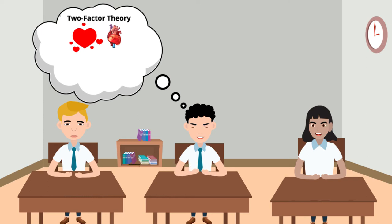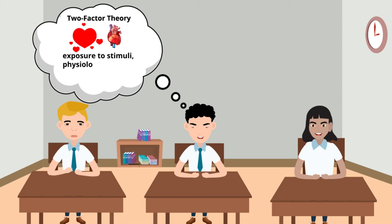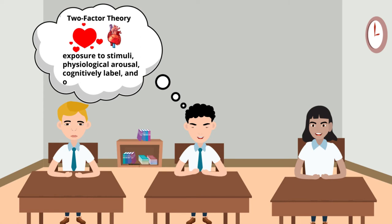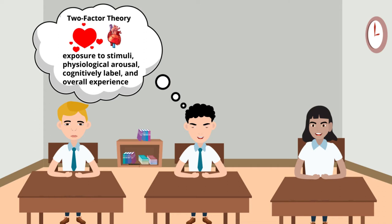The two-factor theory of emotion states that emotion is experienced in a combination consisting of exposure to stimuli, physiological arousal, cognitively labeling the emotion, and just overall experiencing the emotion. Stanley Schachter and Jerome E. Singer coined the theory and decided to test it in 1962, in what would later be known as the Schachter and Singer experiment.